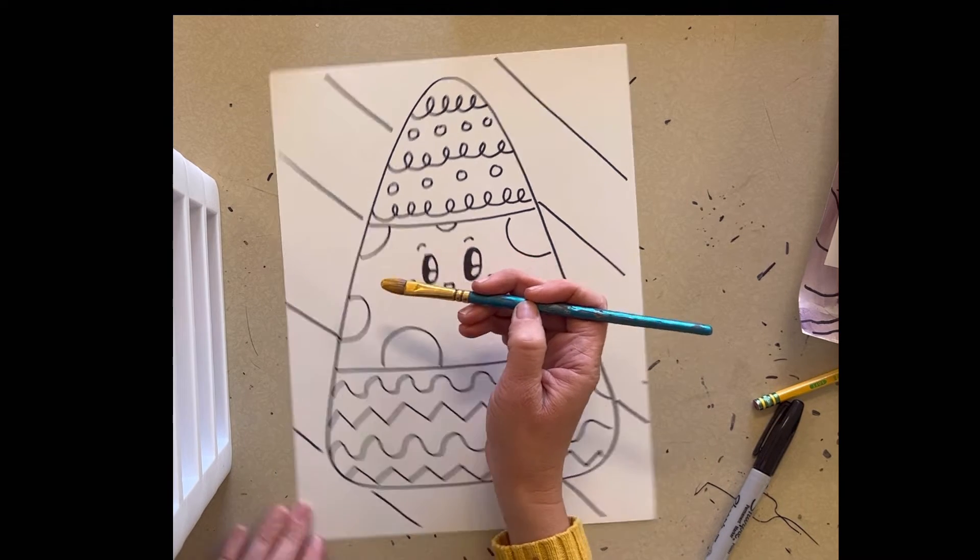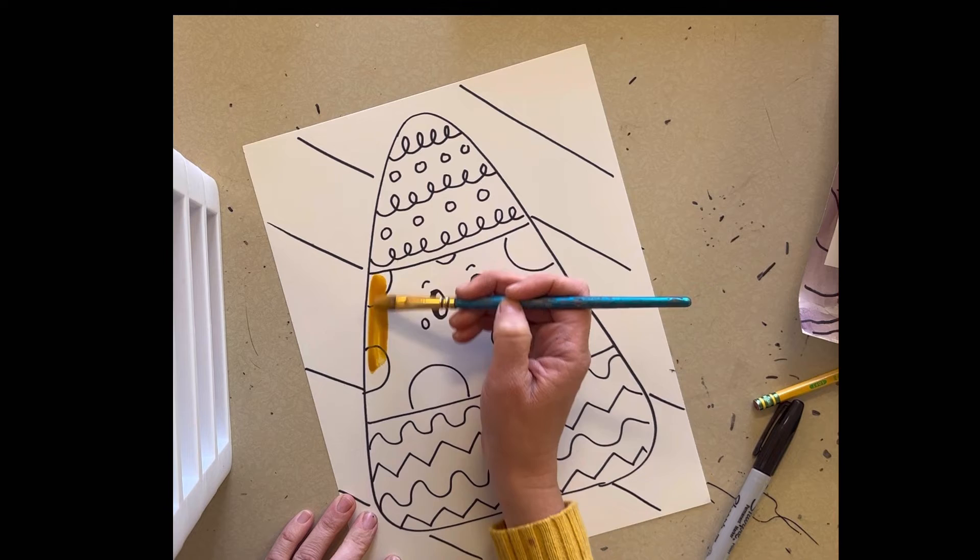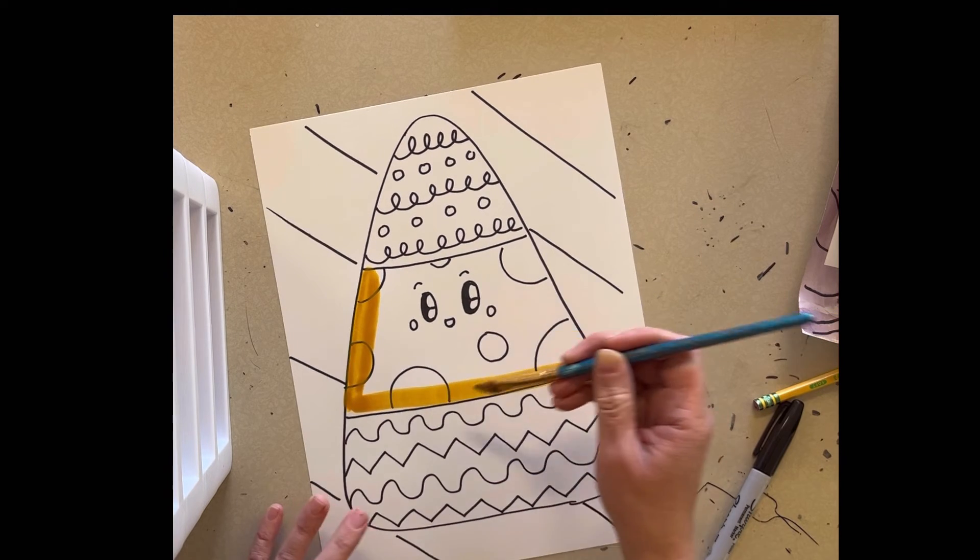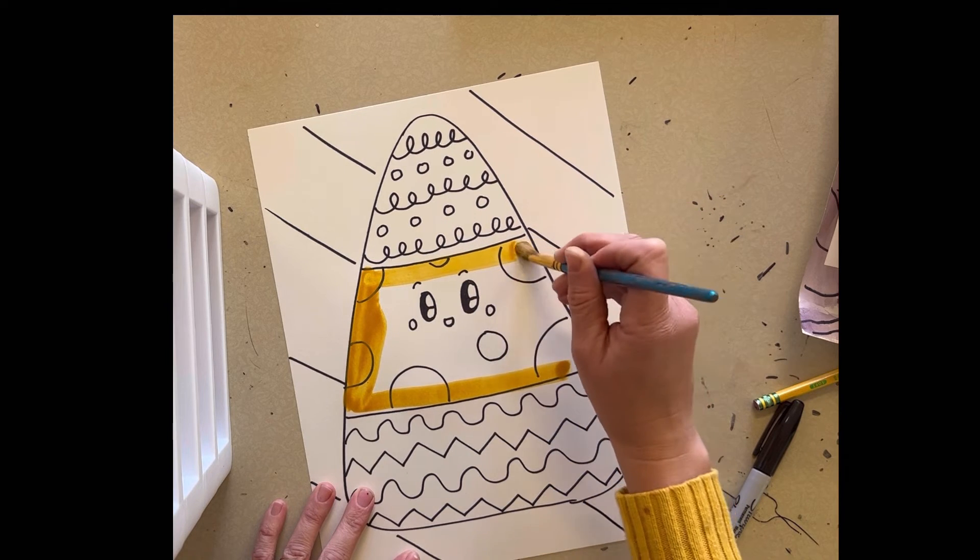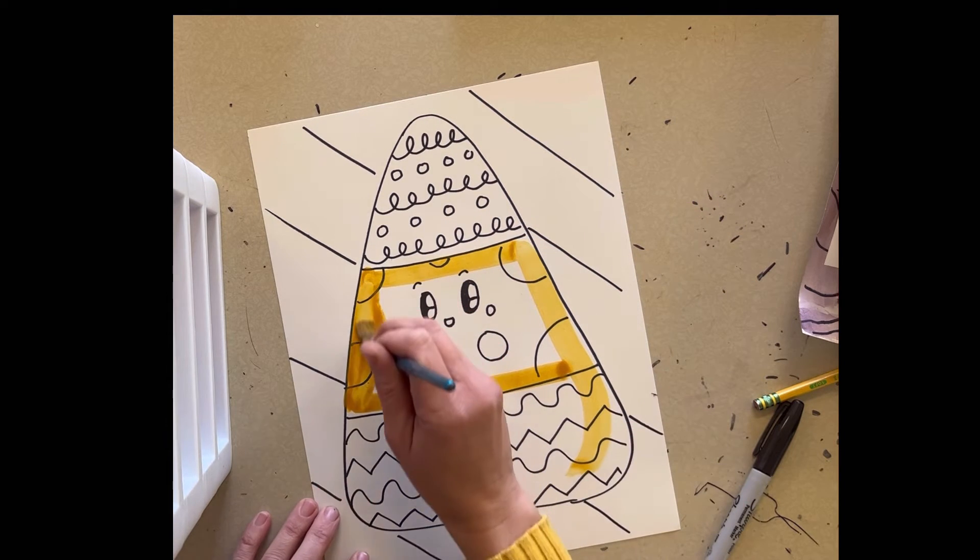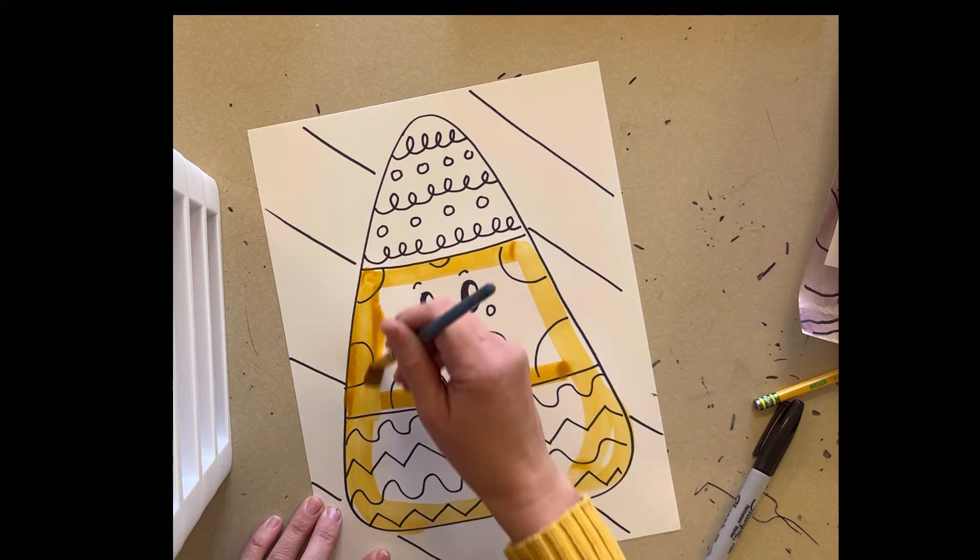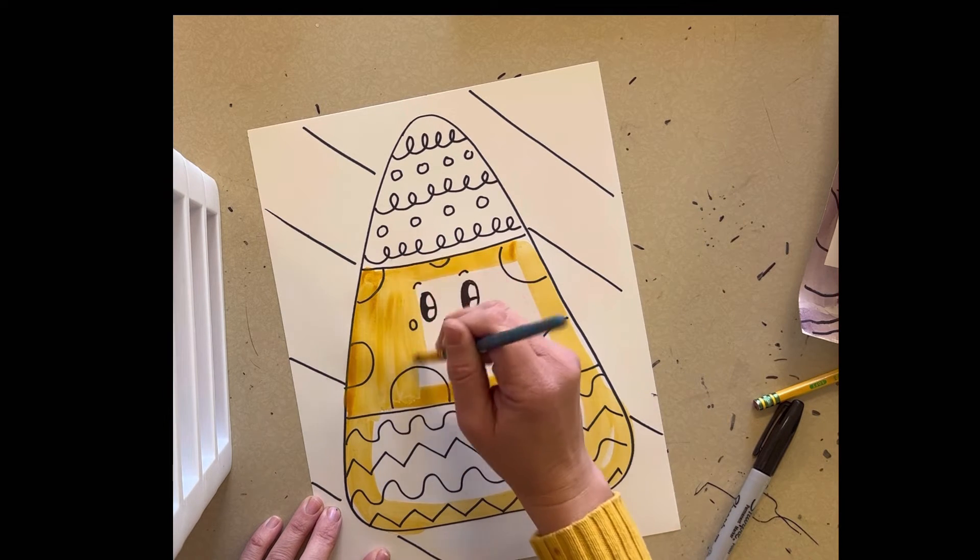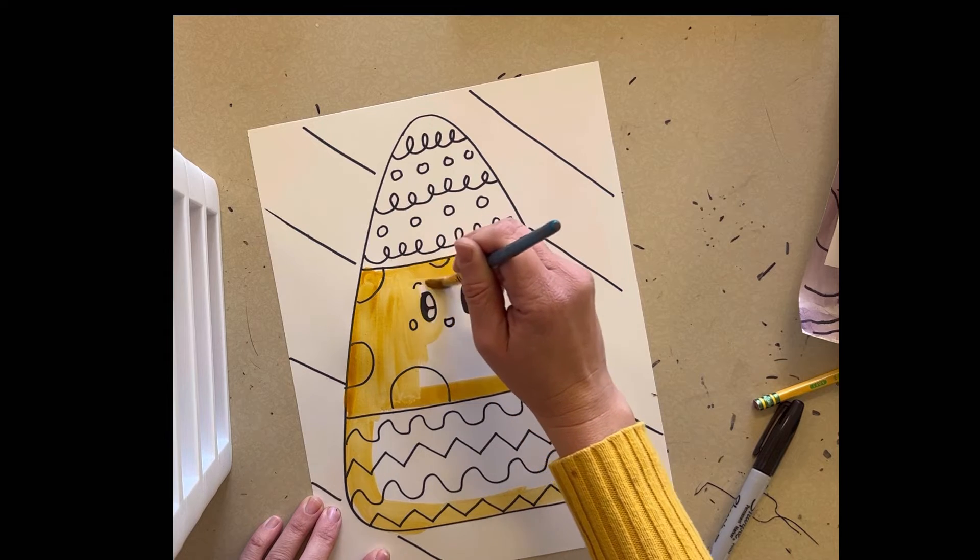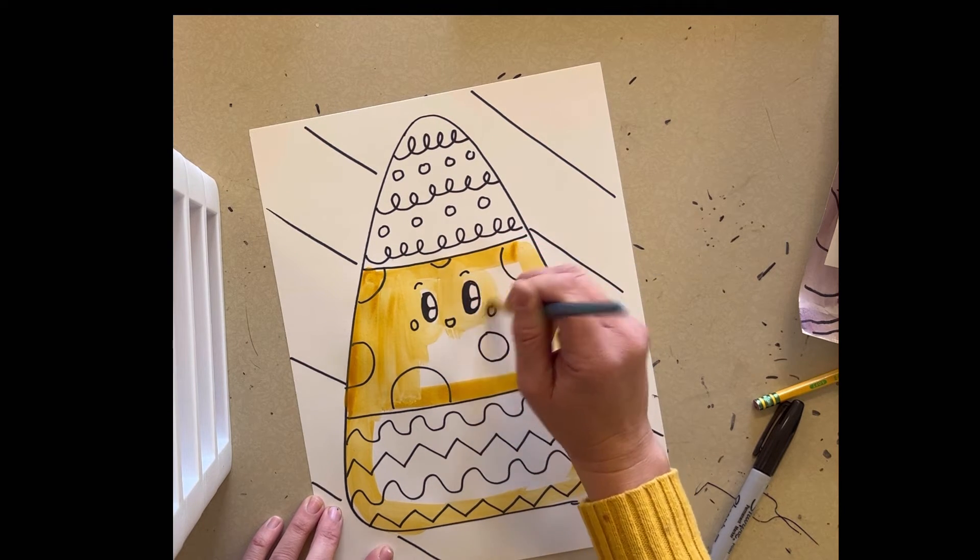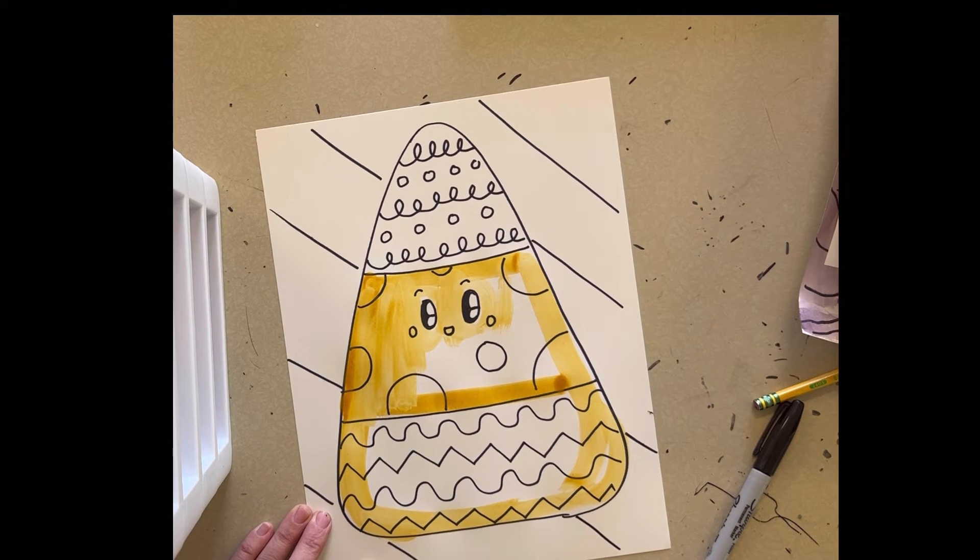And in here, I'm going to paint all yellow. You can probably paint the whole thing yellow because this is also yellow. But when we go to mixing, we're just going to mix up in this area. And I don't want to get those whites of the eyes yellow. Paint around them. Get some more paint.